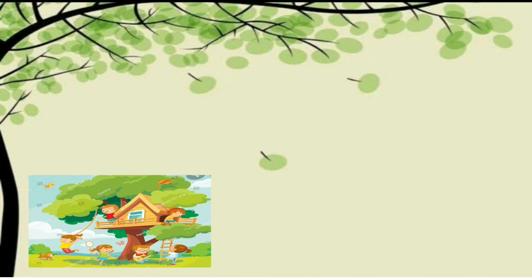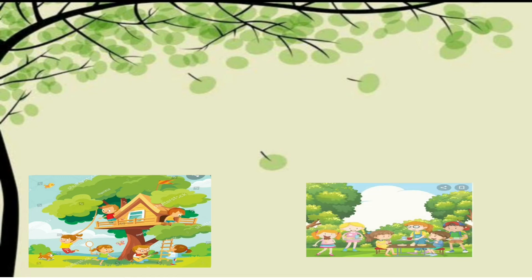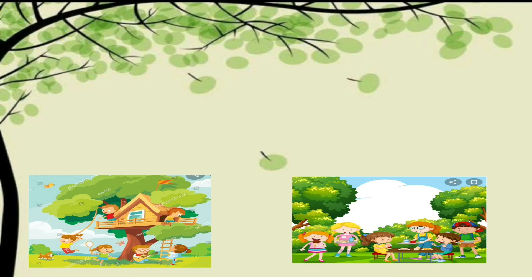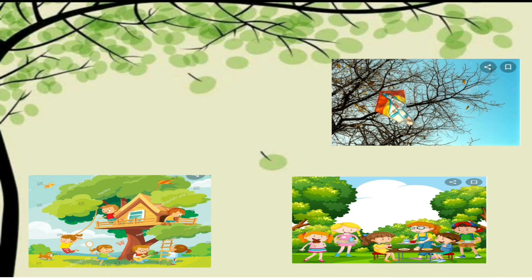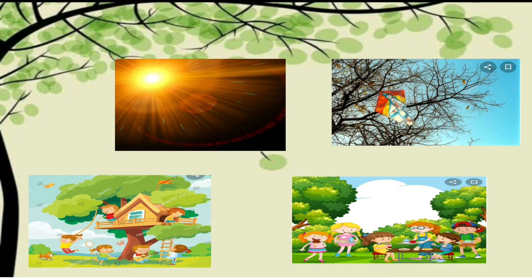Whenever we fly kites, they get caught in trees many times. Whenever it is hot, the poem says: Trees are to make cool shade in summer. Whenever there is heat, you can sit under a tree and find some cool shade.